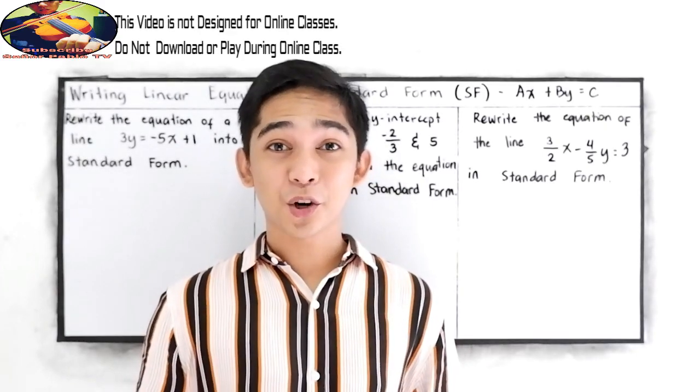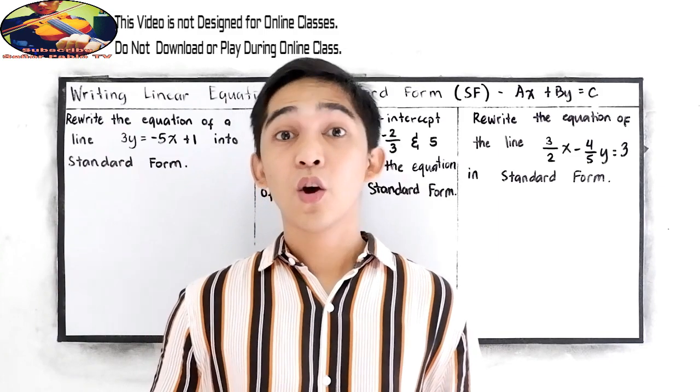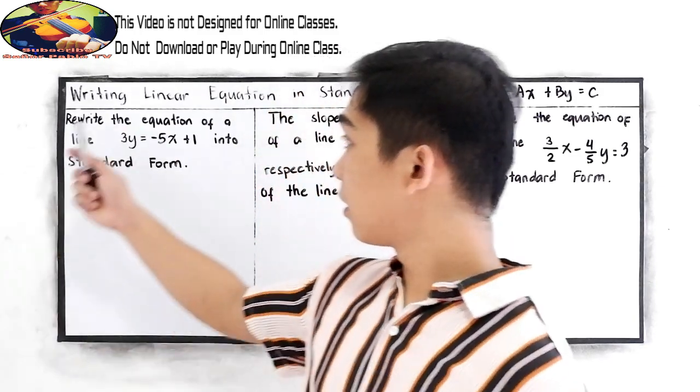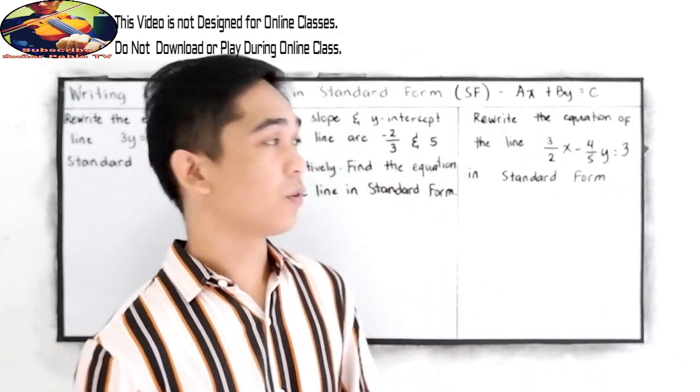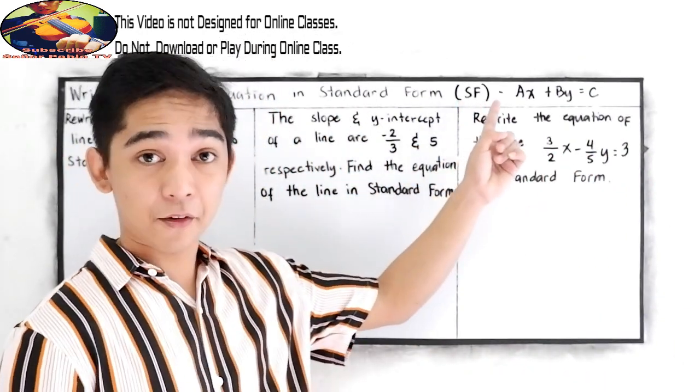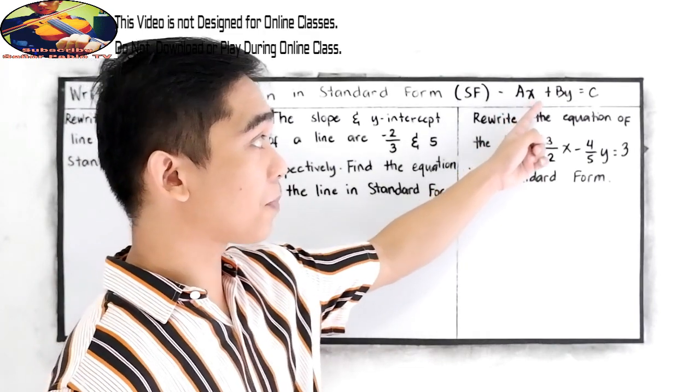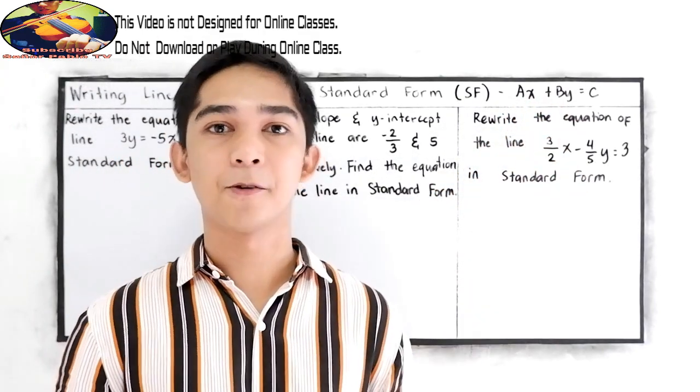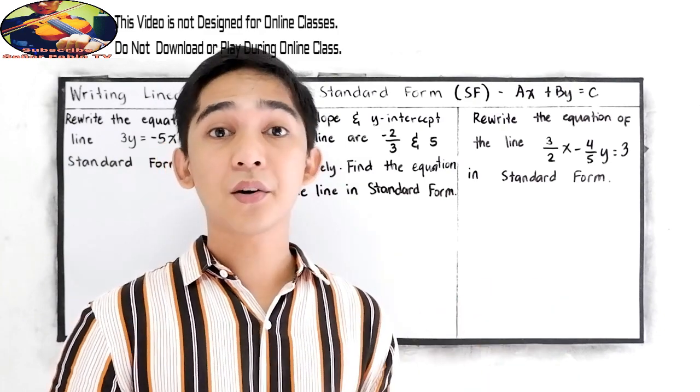Good day everyone, welcome to Senior Pablo TV. For today's tutorial video, we will be discussing writing linear equations in standard form, or what we call the SF. It is in the form Ax + By = C, wherein A, B, and C are real numbers.